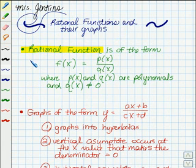A rational function is a function of the form where f(x) is equal to p(x) over q(x). Both your numerator and your denominator here are going to be polynomials, and that denominator, whatever that polynomial may be, cannot be equal to zero.